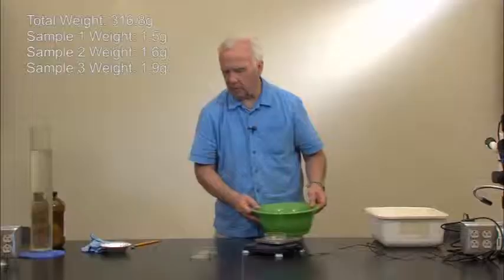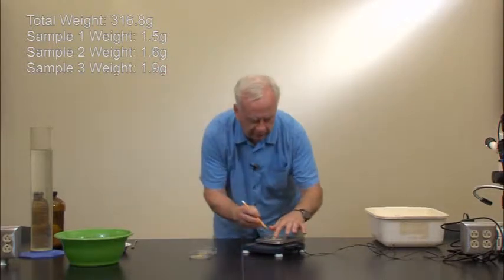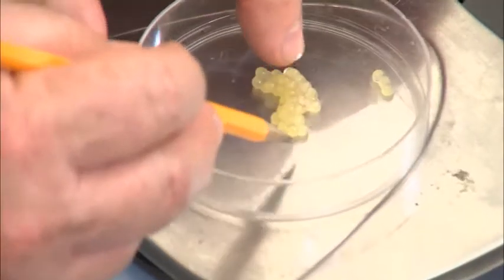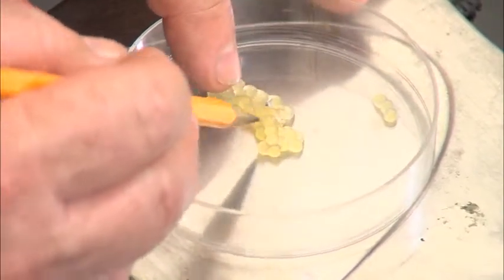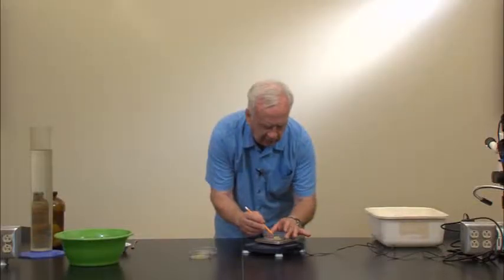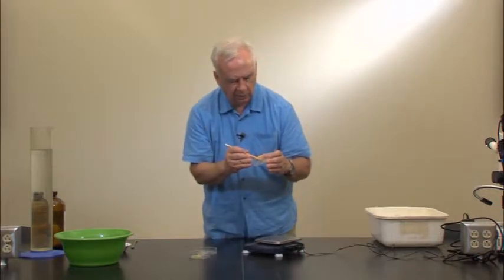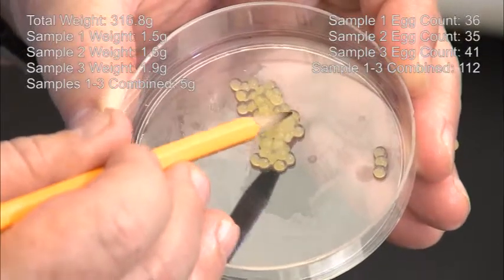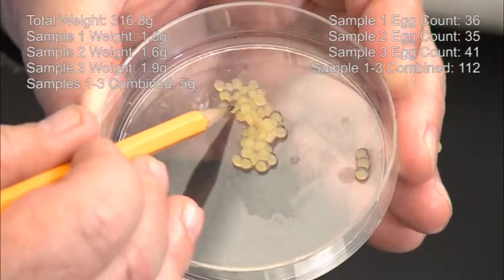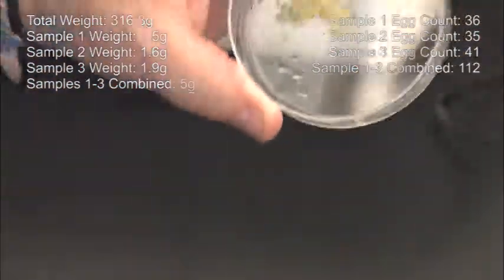Then from those samples, we'll just tease it apart gently, stretch it out, and just count the number of individual eggs. The channel catfish eggs are relatively large, so we'll just count the number of individual eggs that are there in our sample.